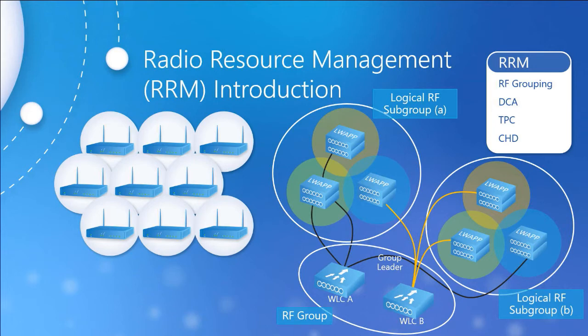RRM consists of several sub-algorithms: RF grouping, dynamic channel assignment (DCA), transmit power control (TPC), and coverage hole detection (CHD). One of the first things RRM does is form an RF group of its associated access points, enabling the controller to recognize and configure its own access points while acknowledging neighboring ones it doesn't manage — important in typical office environments with adjacent company APs or multiple controllers in a deployment.